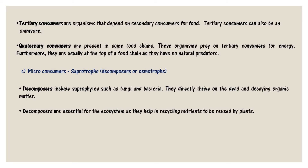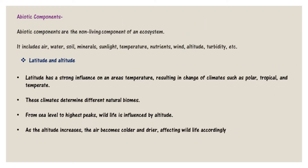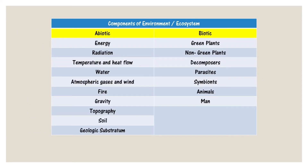Earthworms and certain soil organisms such as nematodes and arthropods are detritivore feeders that help in decomposing organic matter and are called detritivores. Abiotic components are the non-living components of an ecosystem and include air, water, soil, minerals, sunlight, temperature, nutrients, wind, altitude, turbidity, etc. Latitude and altitude have a strong influence on an area's temperature, resulting in different climates such as polar, tropical, and temperate, which determine different natural biomes. As altitude increases, the air becomes cooler and drier, affecting wildlife accordingly.